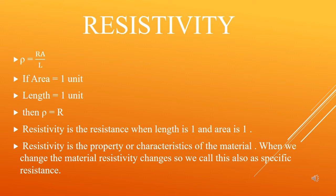If area equals 1 unit and length equals 1 unit, then rho equals R, which is resistance. That means rho is the resistance of the conductor when area is taken as 1 unit and length is also 1 unit — then resistance is the constant rho. The difference is: resistance will change with length and area, but here we have fixed length and area as 1 and 1, so rho equals R. We call this resistivity.